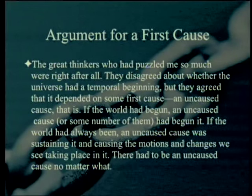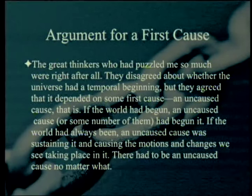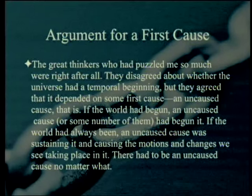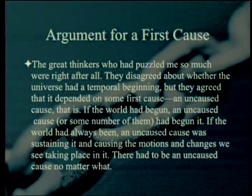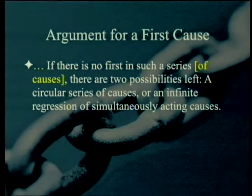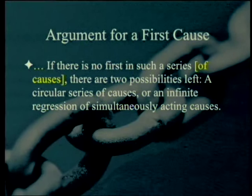The great thinkers disagreed about whether the universe had a temporal beginning but agreed it depended on some first uncaused cause. If the world had begun, an uncaused cause had begun it. If the world had always been, an uncaused cause was sustaining it and causing the motions and changes we see. There had to be an uncaused cause no matter what. If there is no first in a series of causes, there are only two possibilities left: a circular series of causes, or an infinite regression of simultaneously acting causes.